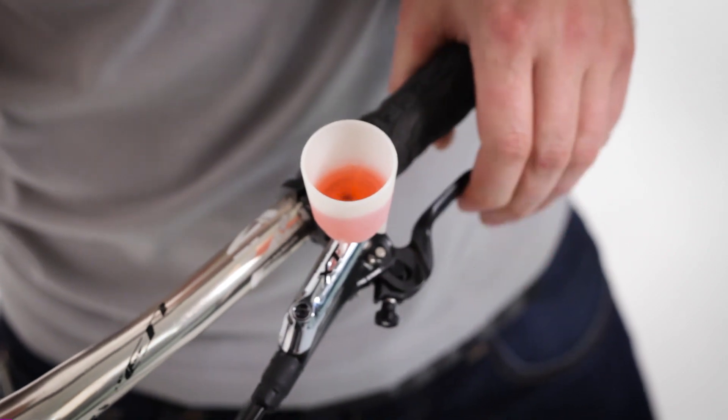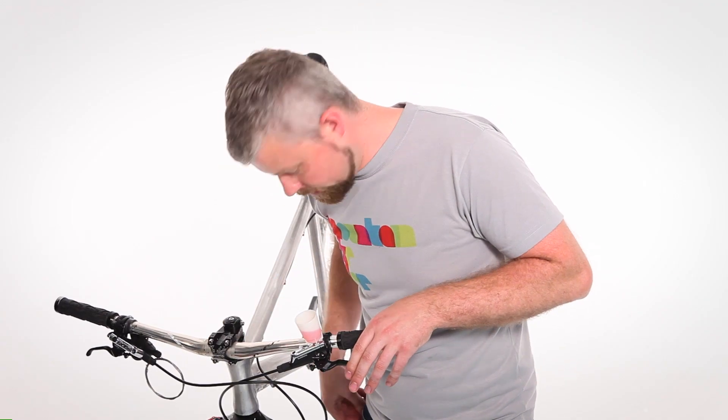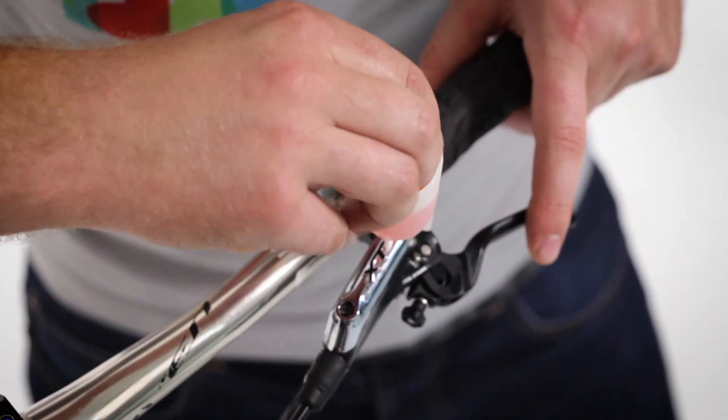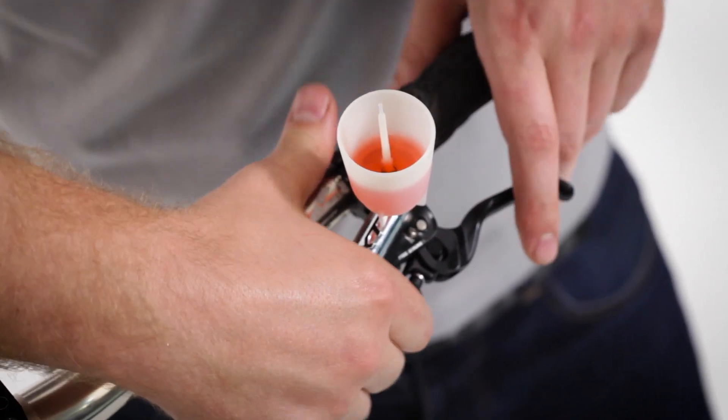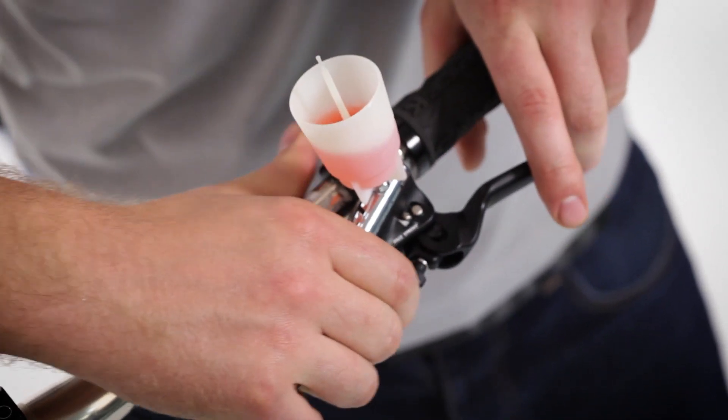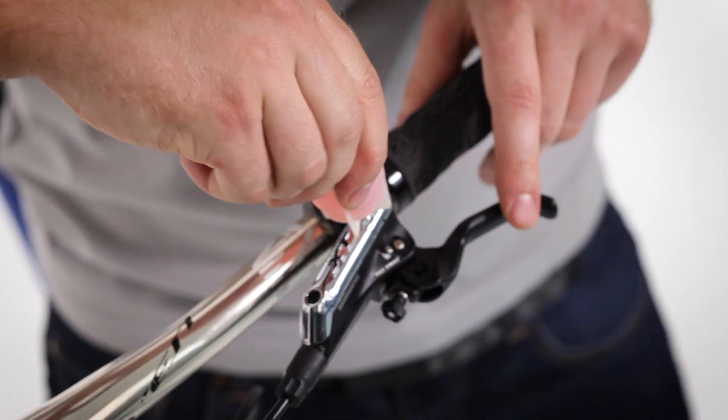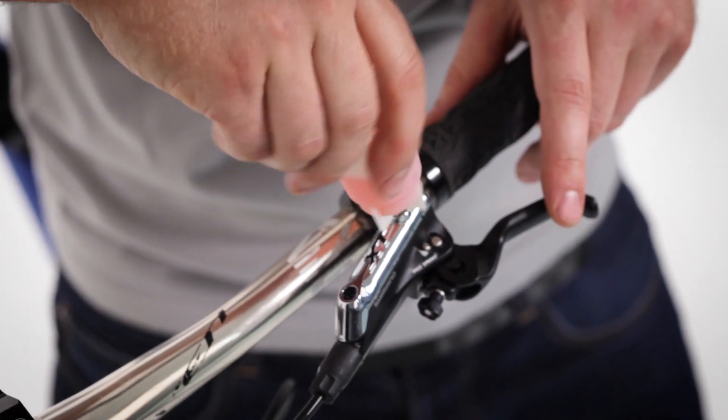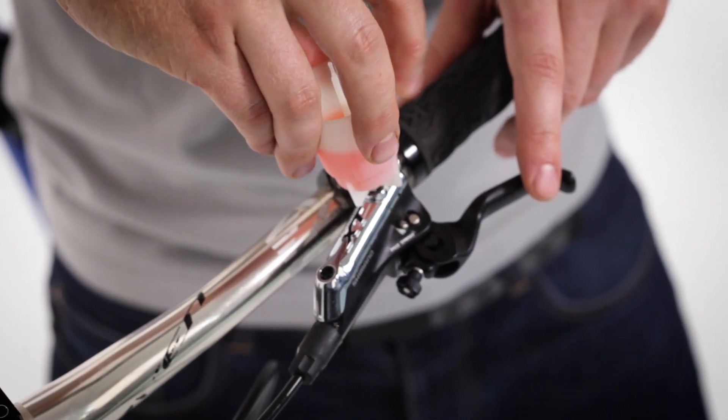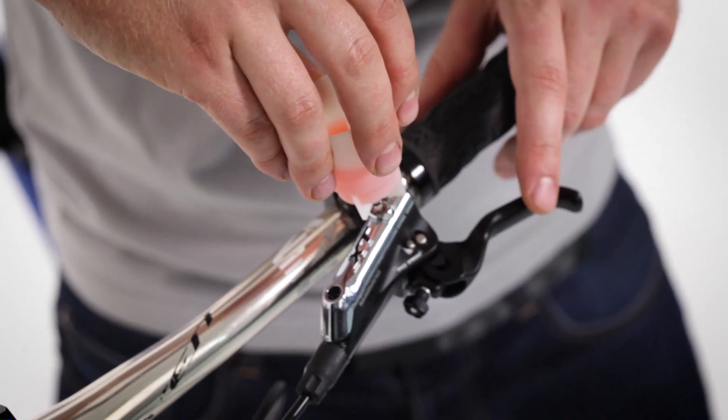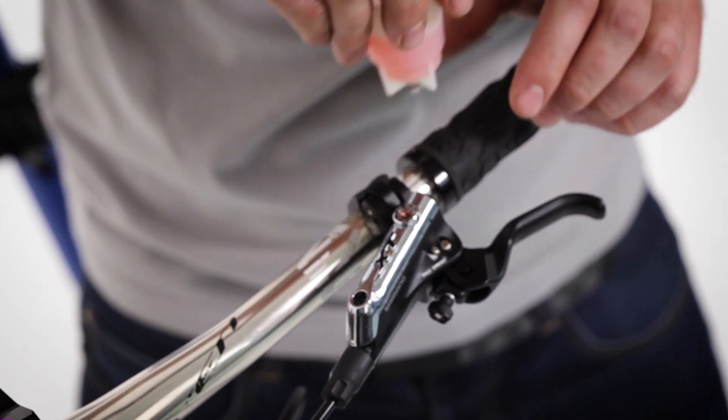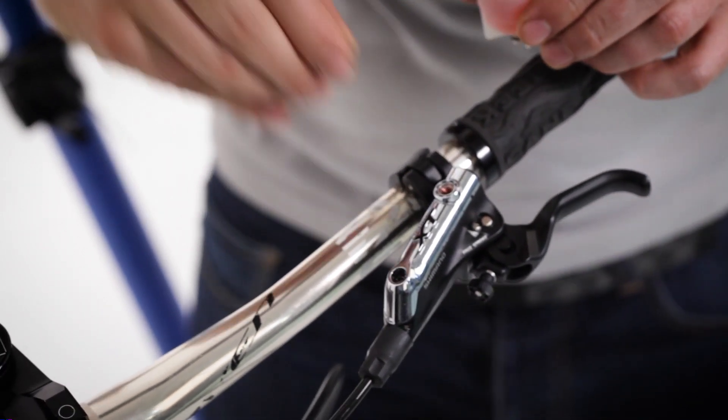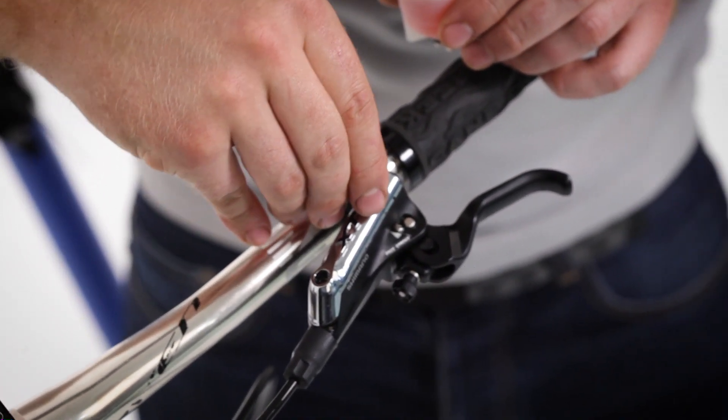When you're happy that you've got all the bubbles out that you can, then we can put our little plunger into our funnel. And then with the lever nice and level so we don't lose any fluid, well, at least the smallest amount possible, we can unscrew the funnel and fit our bleed screw.